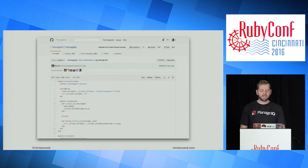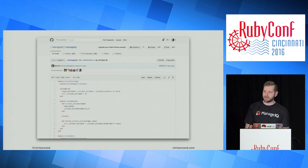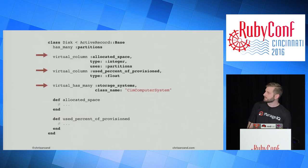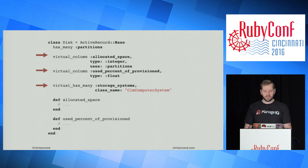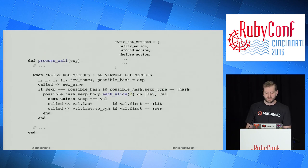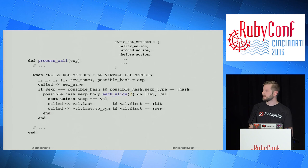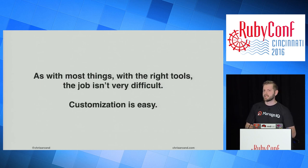In ManageIQ we have our own virtual column implementation for ActiveRecord that lets us treat any method as a database column for reporting purposes. You might define a virtual column called 'allocated_space' with a type of integer using partitions. The point is that Rails DSL calls and custom DSL aren't that difficult to handle — it's just another edge case. Most of the time it's arguments of symbols naming methods to be called. As with most things, with the right tools the job isn't very difficult, and customization is easy. You can execute this code on your project right now.